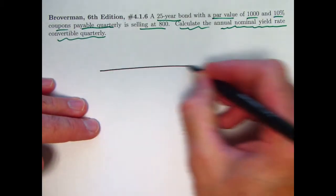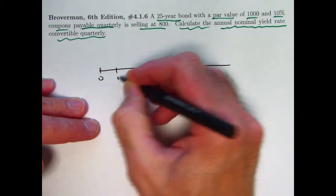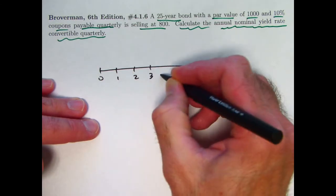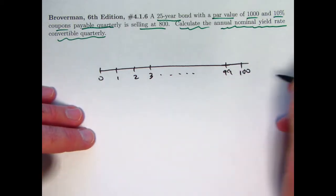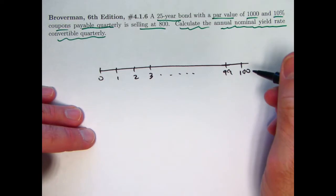I'll draw a timeline for this one. These represent quarters—100 quarters in 25 years.